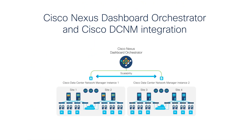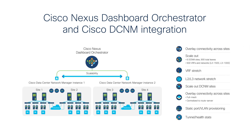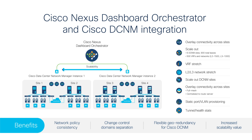Version 3.2 also provides support for Data Center Network Manager or DCNM multi-site fabric orchestration. It enables overlay connectivity across sites and support for scaling out six DCNM sites and 500 VRFs and networks. Version 3.2 also supports VRF stretch and L2/L3 network stretch. Get full network policy consistency and flexible geo-redundancy for DCNM environments.